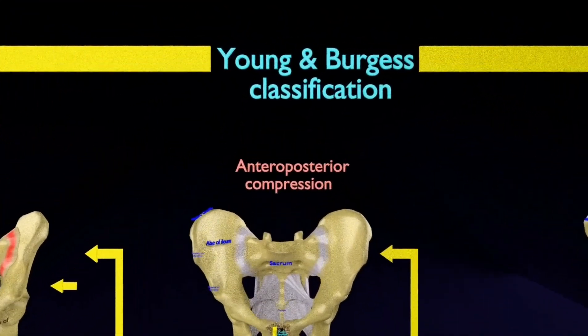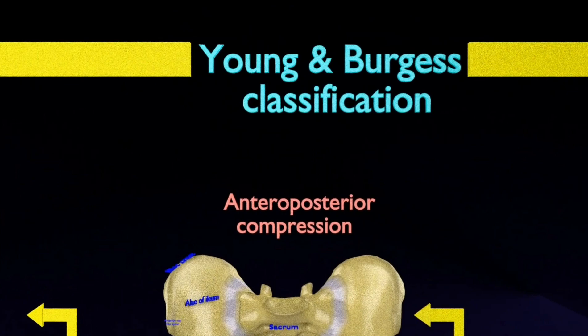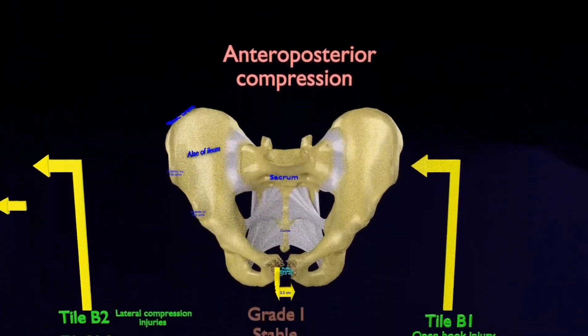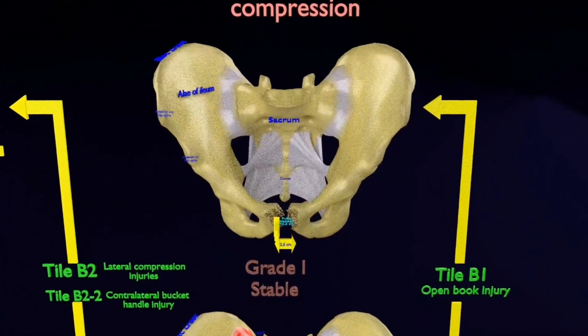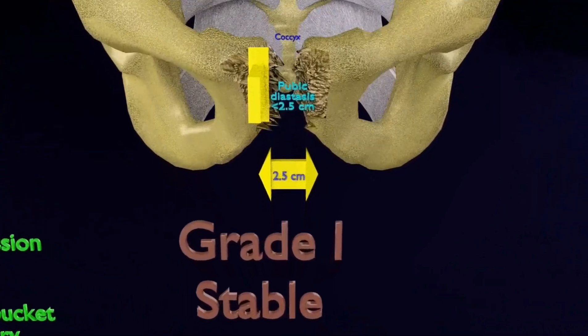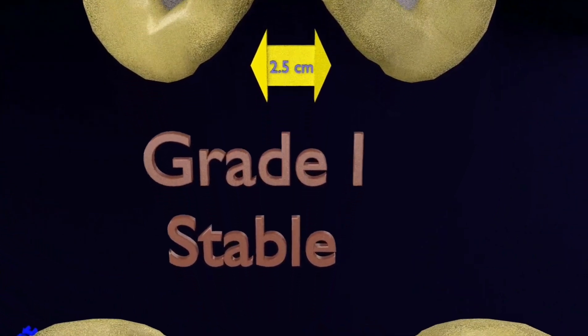Now, I am going to give some light on the anterior posterior compression. This is the grade 1 type. It is stable and the fracture has happened at the symphysis pubis. The pubic diastasis is less than 2.5 cm.